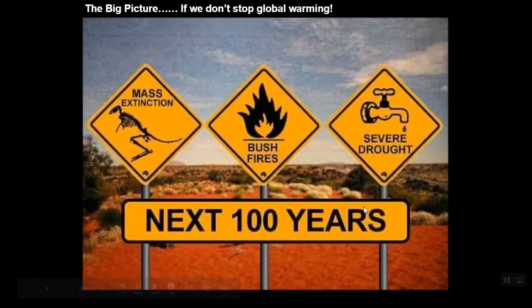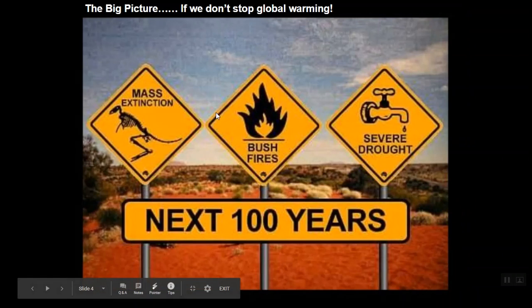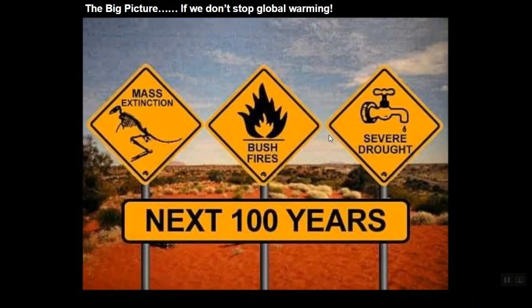On the next slide you've got the big picture. So if we don't stop global warming, what is going to happen? In the next 100 years, we could see extinction of loads of different animals. We'll get bushfires, which we were already seeing if you think about Australia recently. And we'll get drought, which means there'll be no water for us to drink.